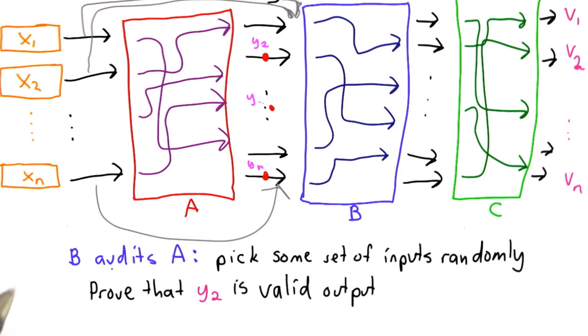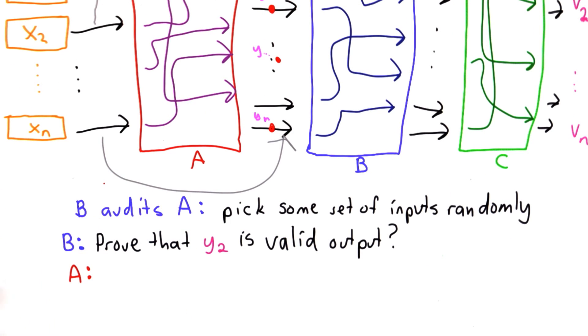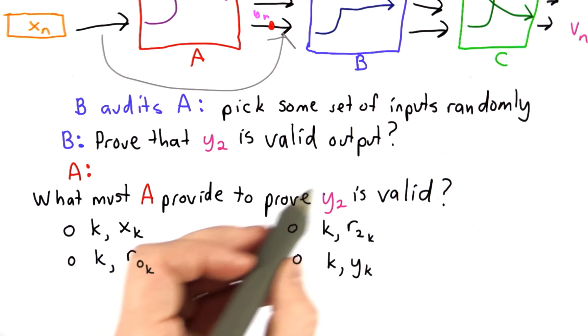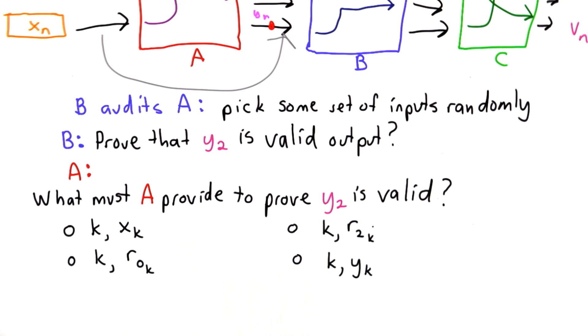And what B does is ask A to prove that y2 is a valid input. In order to prove this, what does A need to provide? So what must A provide to B in order to prove that y2 is a valid output from A's MixNet?